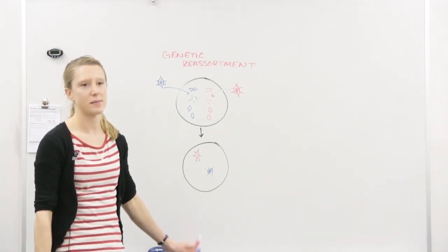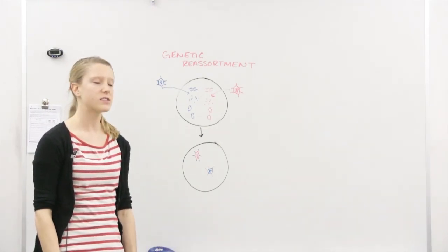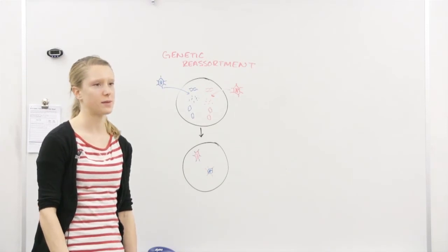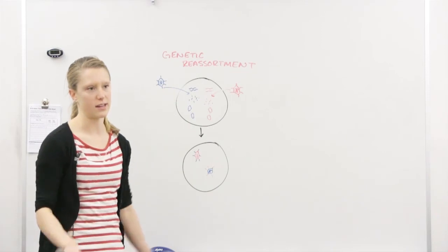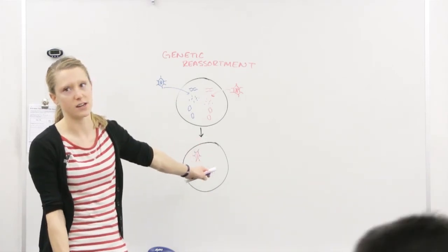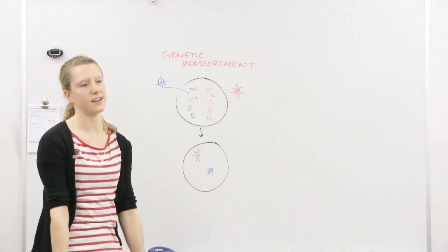Viruses. Don't ever say bacteria do genetic reassortment. The closest thing bacteria do to genetic reassortment is what? There are two things that they can do to make themselves look different. Viruses can do genetic reassortment to change themselves. What do bacteria do?